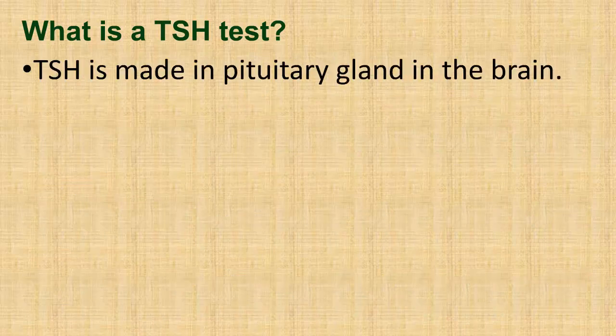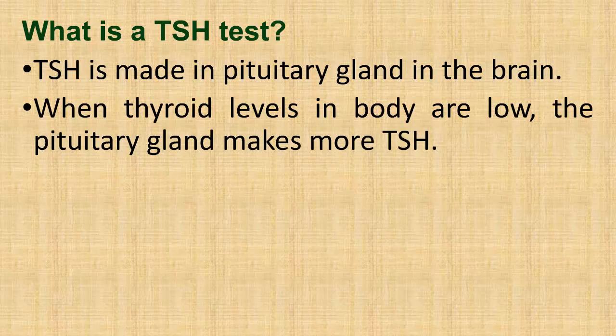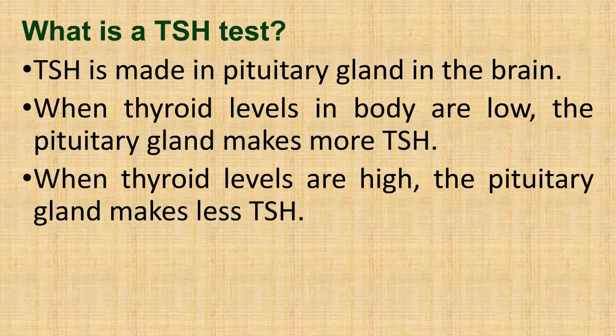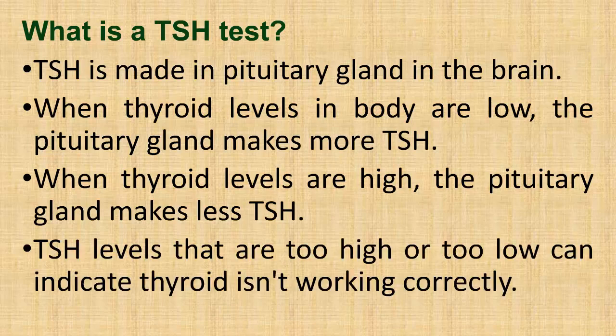TSH is made in the pituitary gland in the brain. When thyroid levels in the body are low, the pituitary gland makes more TSH. When thyroid levels are high, the pituitary gland makes less TSH. TSH levels that are too high or too low can indicate the thyroid isn't working correctly.